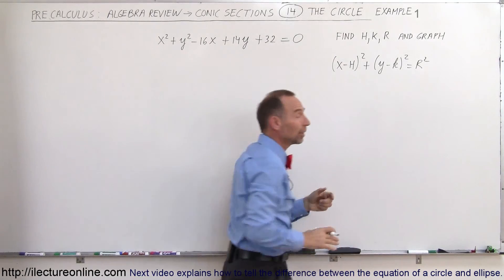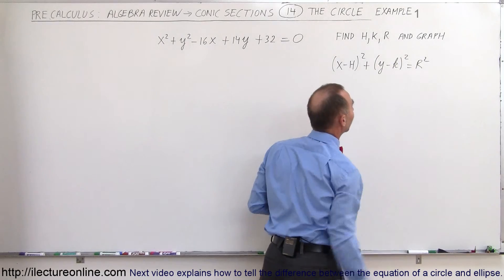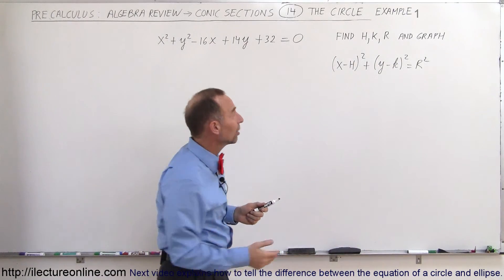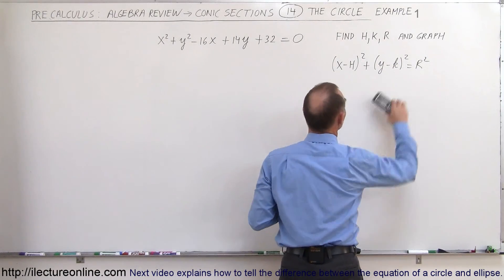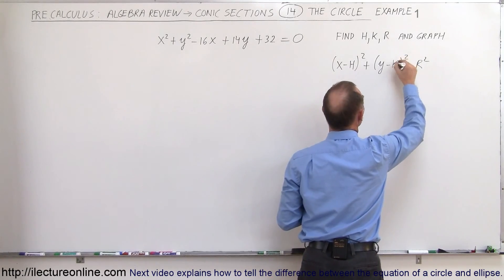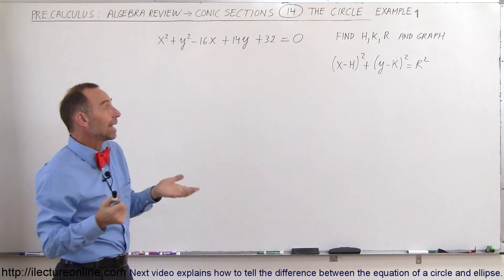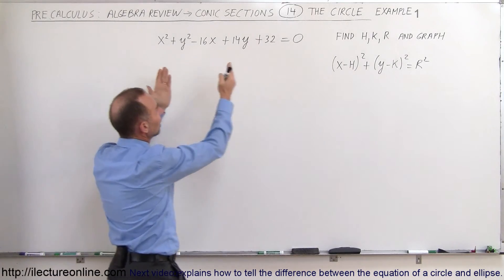Ultimately what you want to do is find h, k, r and then finally graph. To find h, k, and r, I'll use capital letters as it makes it easier to see and differentiate between them. You want to take this equation and put it into that general form of the circle.